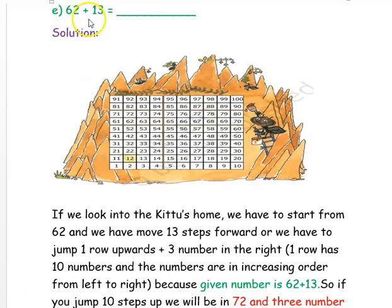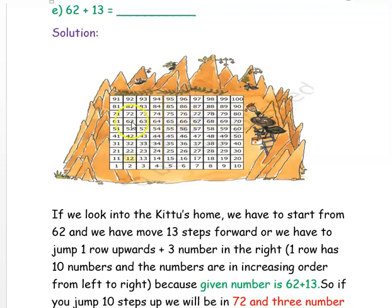The next question is: 62 plus 13 equals ___. We start from number 62 in the number grid. Since it is plus, we want to add and go forward. We write 13 as 10 plus 3. To move 10 digits, we jump 1 row down — since 1 row has 10 numbers — landing on 72. Then we move 3 digits to the right, because numbers increase to the right: 1, 2, 3 — landing on 75. So 62 plus 13 is 75.